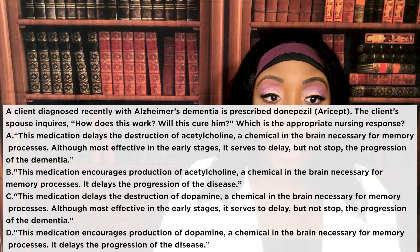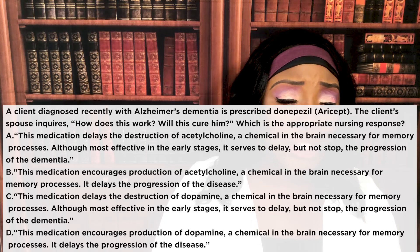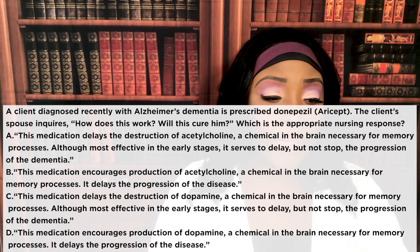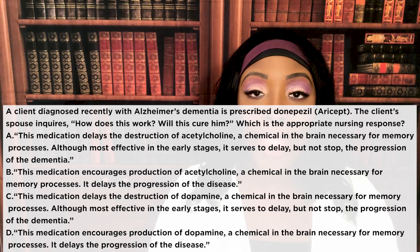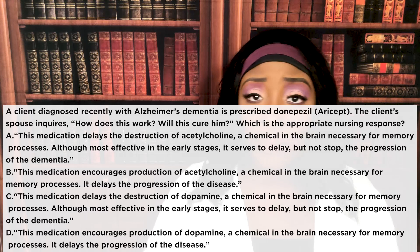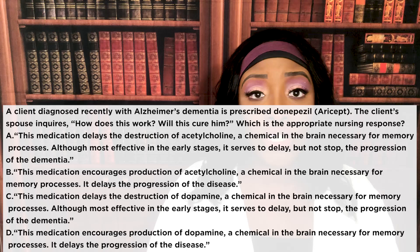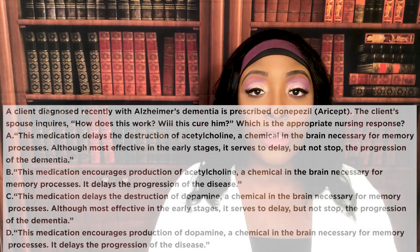The correct answer is A. Acetylcholine is needed for memory processes. Choice B is wrong — this medication does not encourage production of acetylcholine; it slows down the destruction of acetylcholine but does not cause production. Choices C and D are wrong because this has nothing to do with dopamine — Aricept doesn't delay the destruction of dopamine, nor does it encourage its production. What it does is slow down the destruction of acetylcholine.